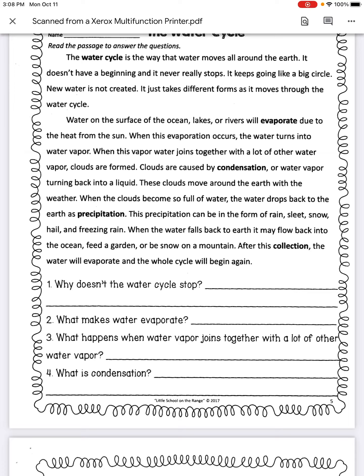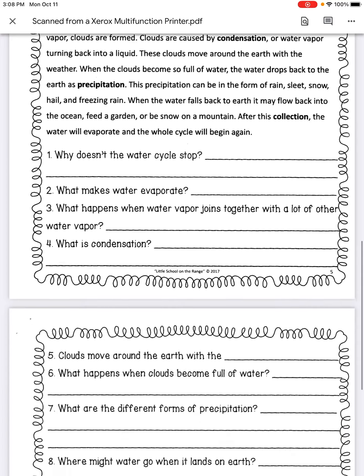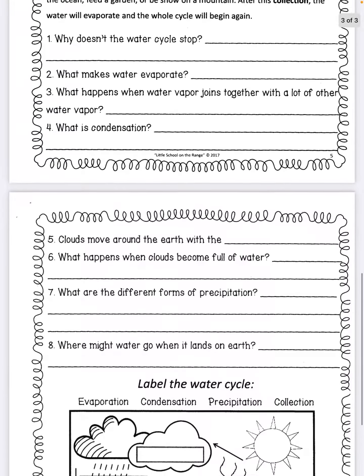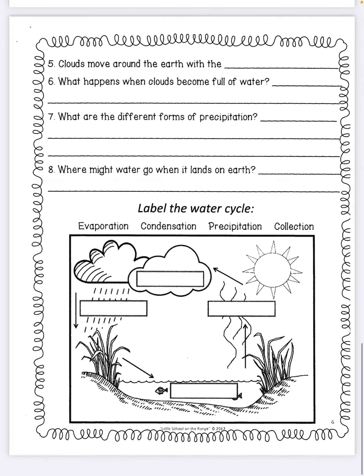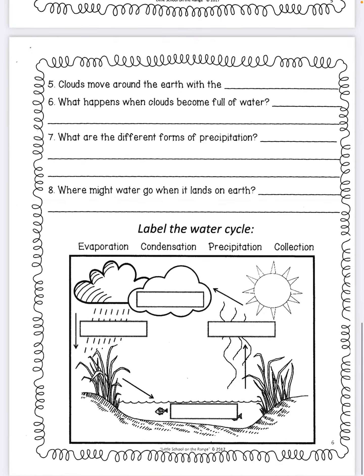Number four: What is condensation? Number five: Clouds move around the earth with the blank. Number six: What happens when clouds become full of water? Number seven: What are the different forms of precipitation?